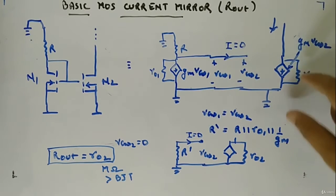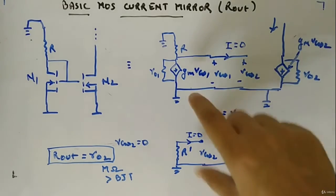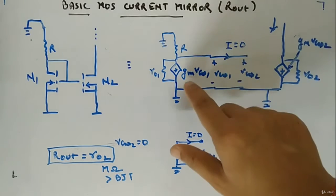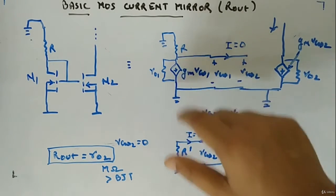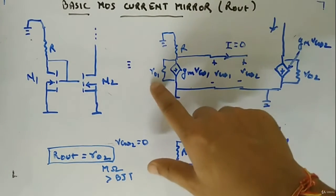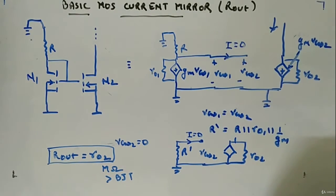Now again here you can see that the voltage across this current source is VGS1, the value of current is GM VGS1. So you can replace this guy with 1 by GM resistor. And all three of them will be in parallel: RO1, R, and 1 by GM.